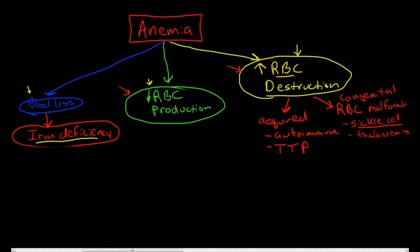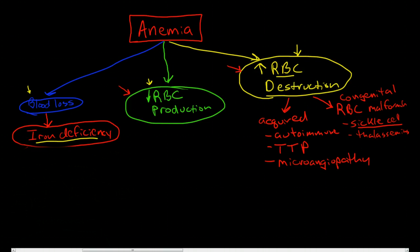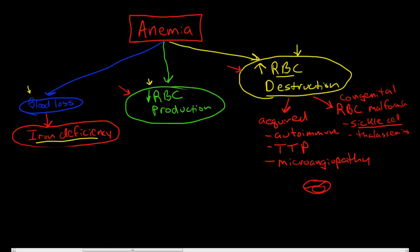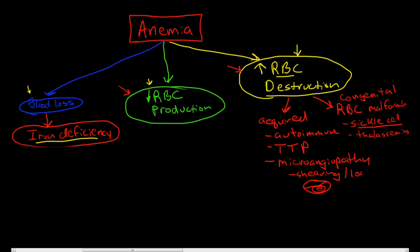TTP, or thrombotic thrombocytopenic purpura, is a microangiopathy, and there are other types of microangiopathies as well. These cause increased red blood cell destruction because clot formations cut small vessels and cause shearing of red blood cells as they try to squeeze through under high flow rates, resulting in loss of red blood cells.